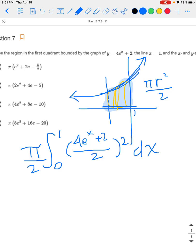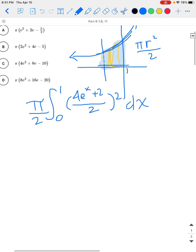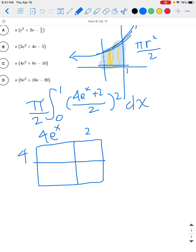Let's go ahead and multiply this out. If you multiply out what's in the parentheses there, the squared, basically you're going to do (4e^x + 2)^2. So that's (4e^x + 2) times (4e^x + 2).